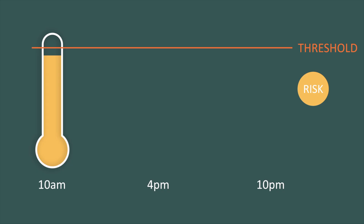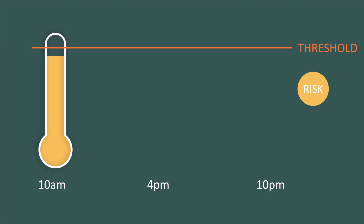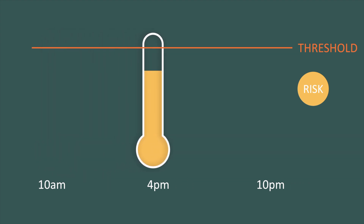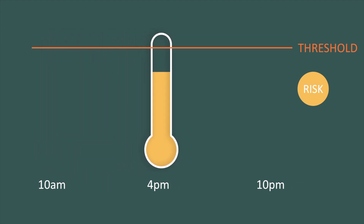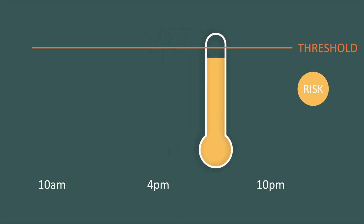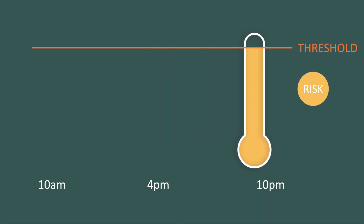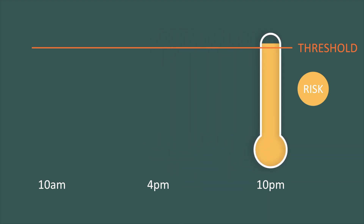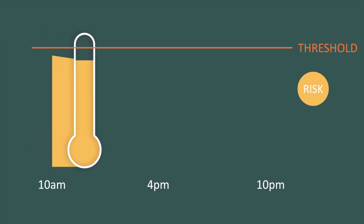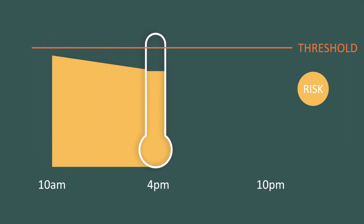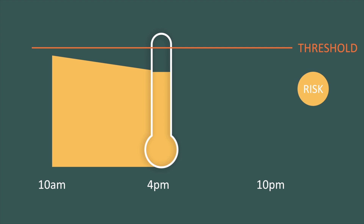From 10 am to 4 pm, risk decreases. Here is the risk meter reading at 4 pm. And from 4 pm to 10 pm, risk exposure increases. Here is the risk meter reading at 10 pm. Let's have a look at this again, but this time we will draw a graph that will follow the risk meter reading along the day.